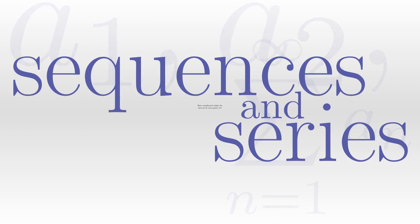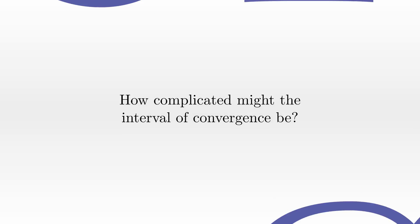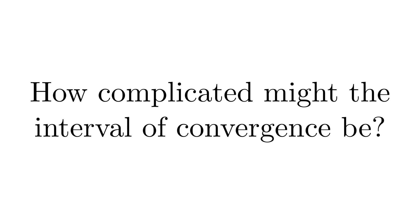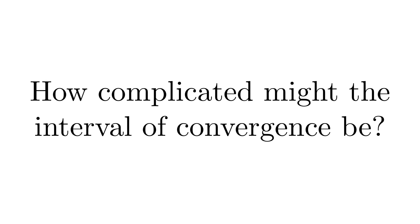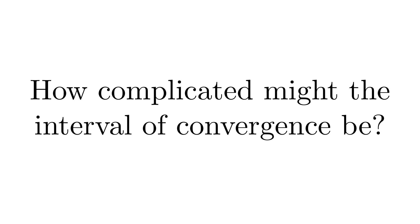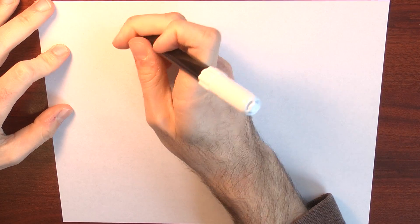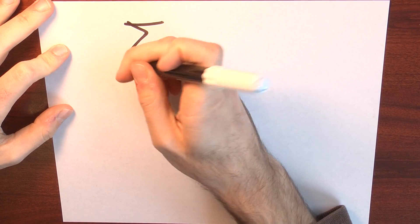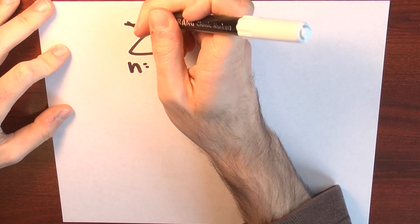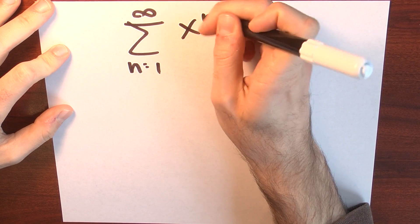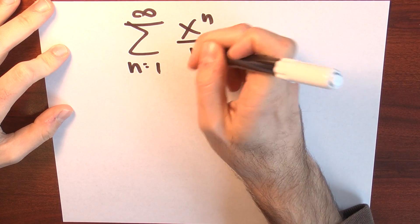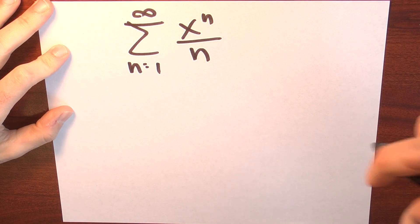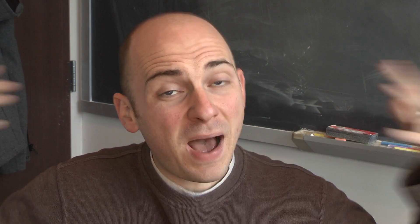Half open intervals. As an example, let's consider this series: the sum as n goes from 1 to infinity of x to the n over n. It's a power series, so what's its interval of convergence?